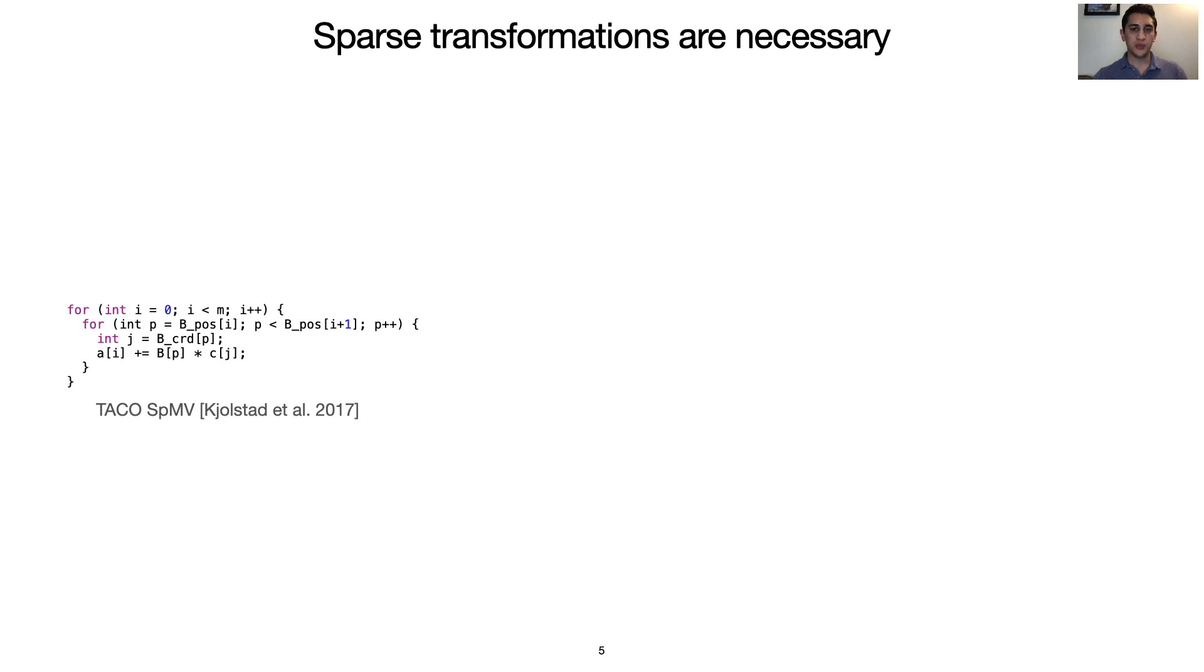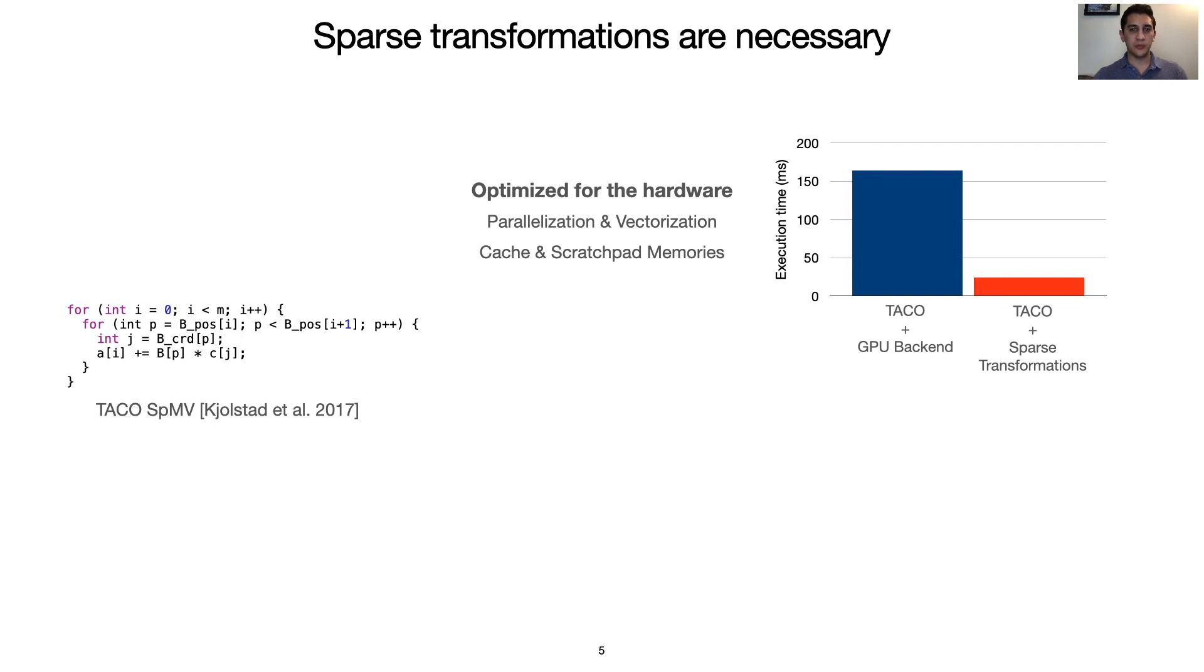We show that sparse transformations are needed to generate codes that are optimized for the hardware, which means that they effectively load balance the computation over parallel elements and vector units. They also allow for efficiently utilizing the memory hierarchy. This is especially important for generating codes for highly parallel accelerators. The automatically generated kernel produced by this work is able to achieve 6.9 times better performance than parallelizing the outer loop of the TACO-generated code over GPU threads.